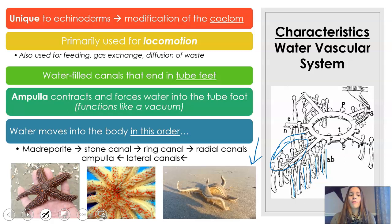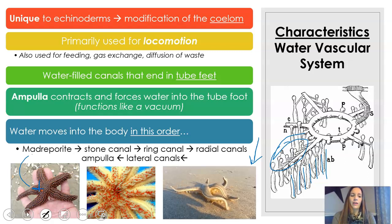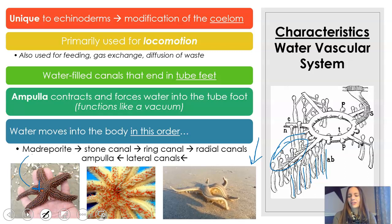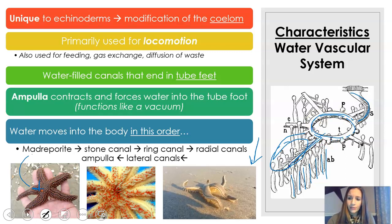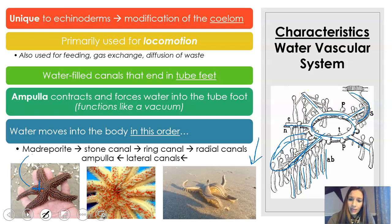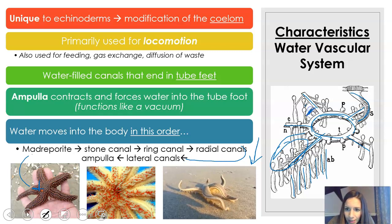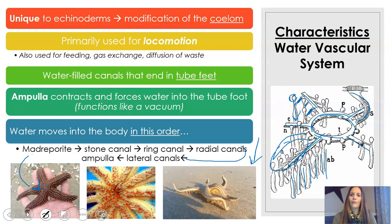There's a certain order that water moves into the sea star or other echinoderm. It first starts with something called the madreporite — the bright orange structure visible on most sea stars because it's a different color. That's where water enters. From there it goes into the stone canal, then the ring canal, then the radial canals which run on each arm, then lateral canals that feed out to the ampulla, and then ultimately out the tube foot.